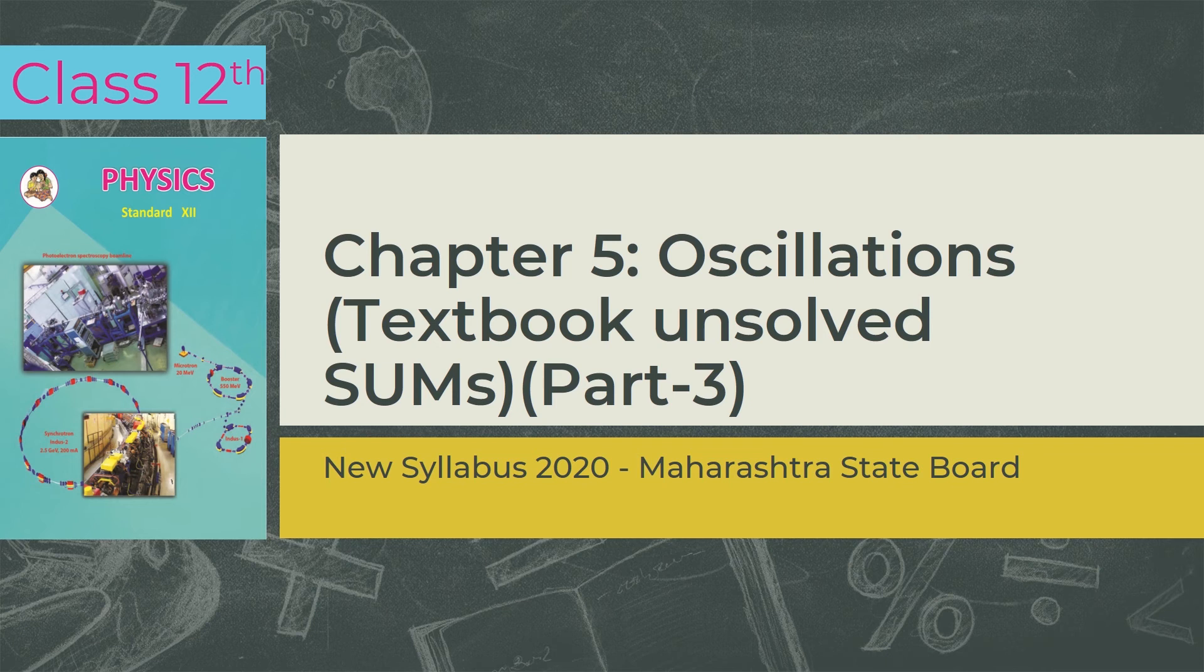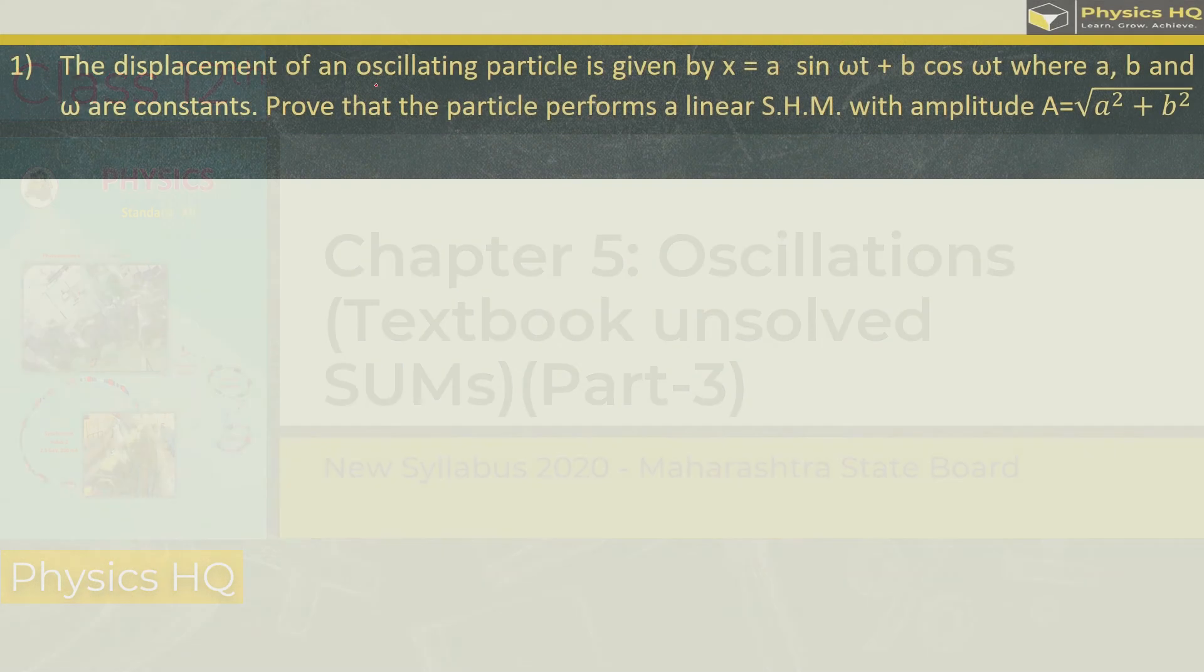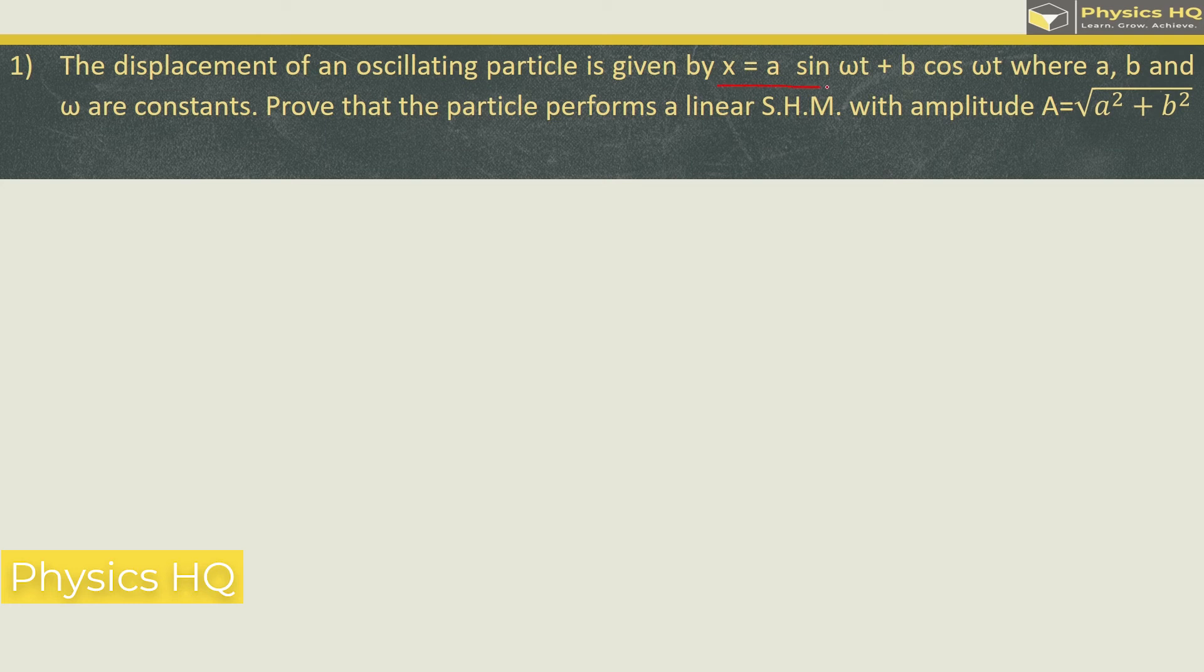Let us start with the first sum for today. The displacement of an oscillating particle is given by x equals a sine omega t plus b cos omega t where a, b and omega are constants. Prove that the particle performs a linear SHM with amplitude A equals root of a squared plus b squared.